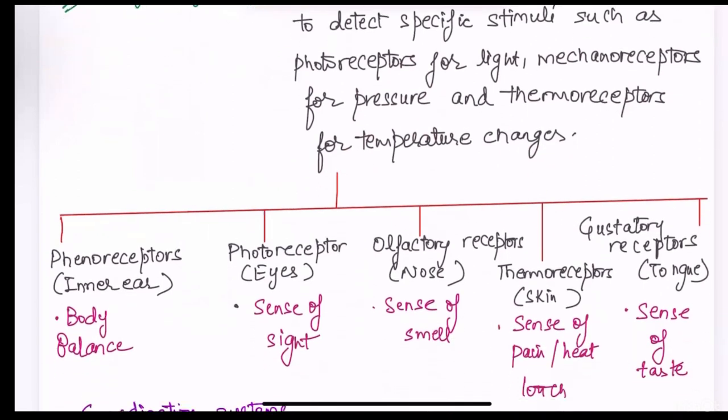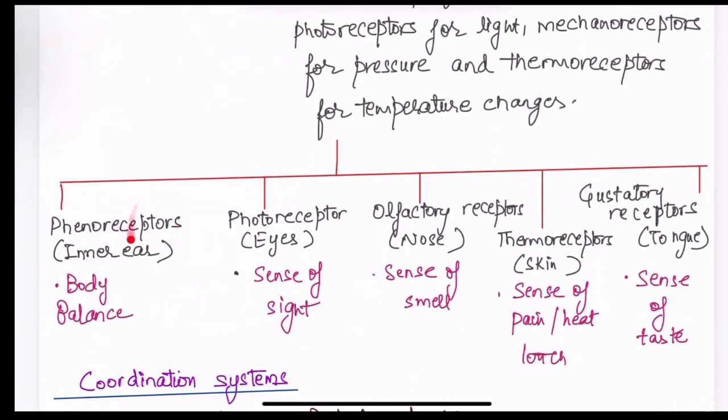Depending upon the sense organs, we have phenoreceptors for inner ear, photoreceptors for eyes for sense of sight, olfactory receptors for nose for sense of smell, thermoreceptors for skin for sense of pain, heat and touch, gustatory receptors for tongue for sense of taste.